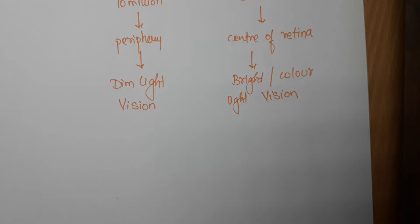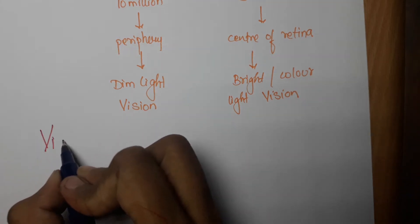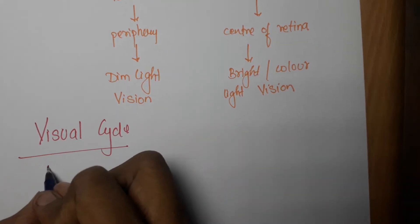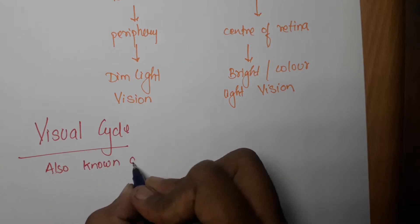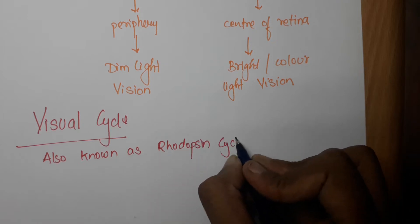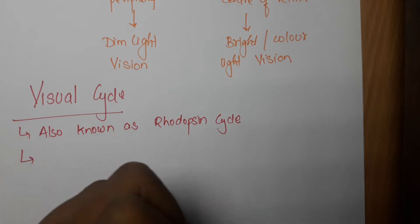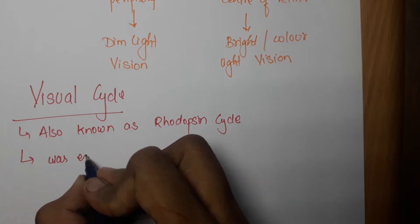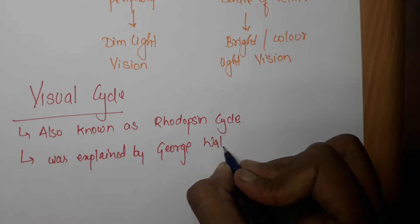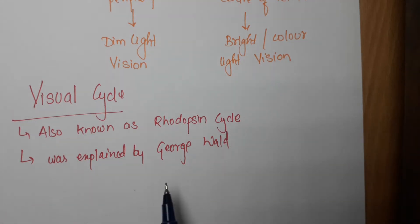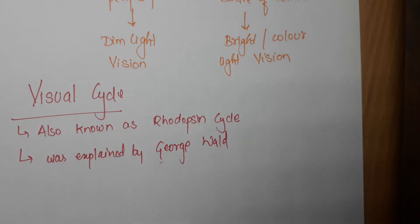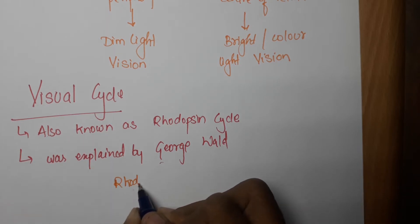Now, there is a visual cycle in the eyes. This cycle is also known as the rhodopsin cycle. This cycle was explained by George Wald. Why is this cycle also known as the rhodopsin cycle? We will see now.